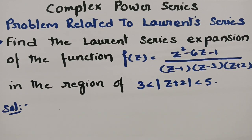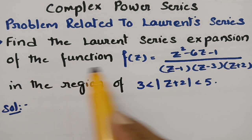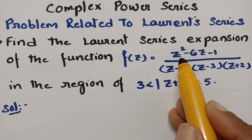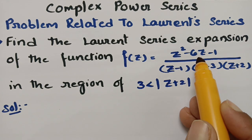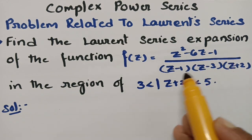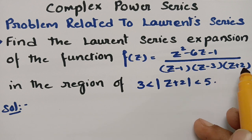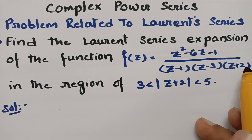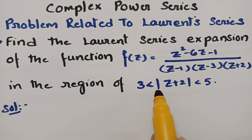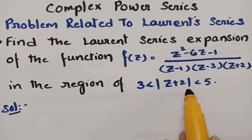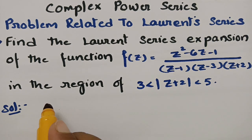Today's problem is related to Laurent series, and this topic is from complex power series. We have to find the Laurent series expansion of the function f(z) = (z² − 6z − 1) / [(z−1)(z−3)(z+2)] in the region 3 < |z+2| < 5.